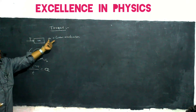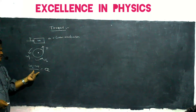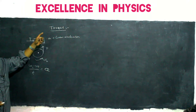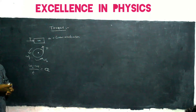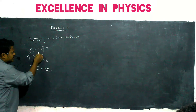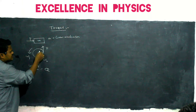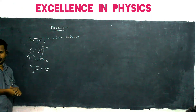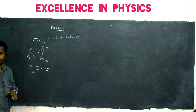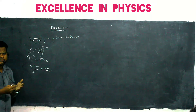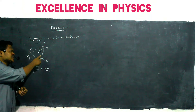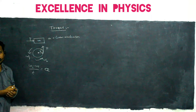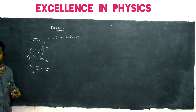This kind of force produces linear acceleration, while this kind of force produces angular acceleration. The force which produces linear acceleration we call it just force — linear force. But here, the force applied at a particular direction at a distance R: this product of R into F we call as torque acting on a body. Or we can say the effect of rotation produced in the body is called torque.